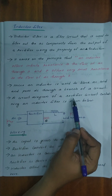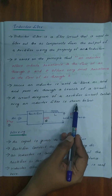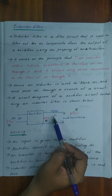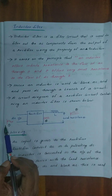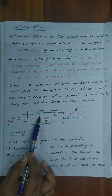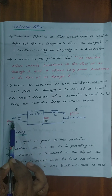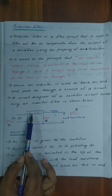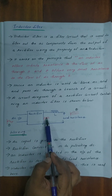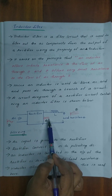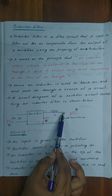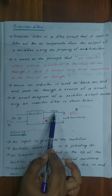A circuit diagram of a rectifier circuit containing an inductor filter is shown below. In a rectifier circuit, we connect the inductor filter. The AC input is given to the rectifier, which produces unidirectional pulsating DC. This DC is then passed through the inductor filter, and the load resistance is connected to the inductor filter.